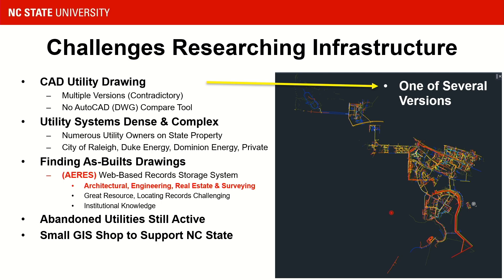The image on the right shows an example of one of our CAD files. There were several versions of this CAD utility drawing that I inherited, and right away I realized there was a lot of contradictory information between all these versions. The AutoCAD compare tool wasn't available in 2015. Our systems are very dense, and we have other utility owners on our property including the City of Raleigh, Duke Energy, Dominion, and private development. We have records for hundreds if not thousands of projects stored in ARIES — Architectural Engineering, Real Estate, and Surveying — a web-based system. Finding information is very challenging, requiring institutional knowledge. I also found abandoned utilities that were actually still active. I'm the sole GIS person in my group, with about four to five people across our facility division at NC State.